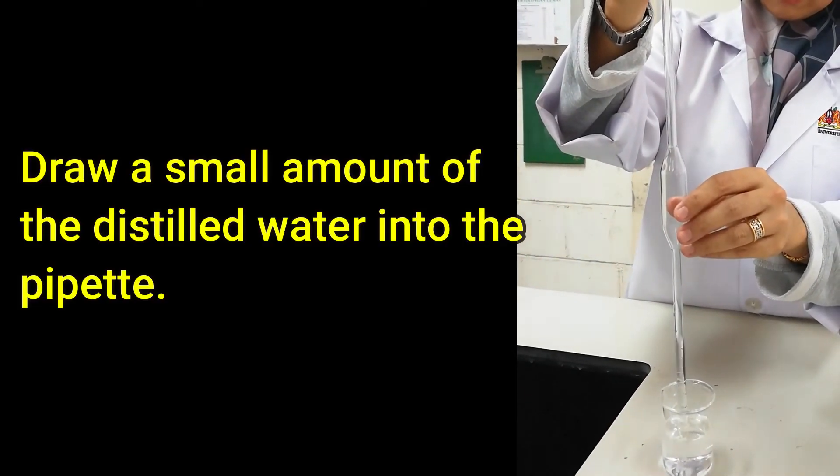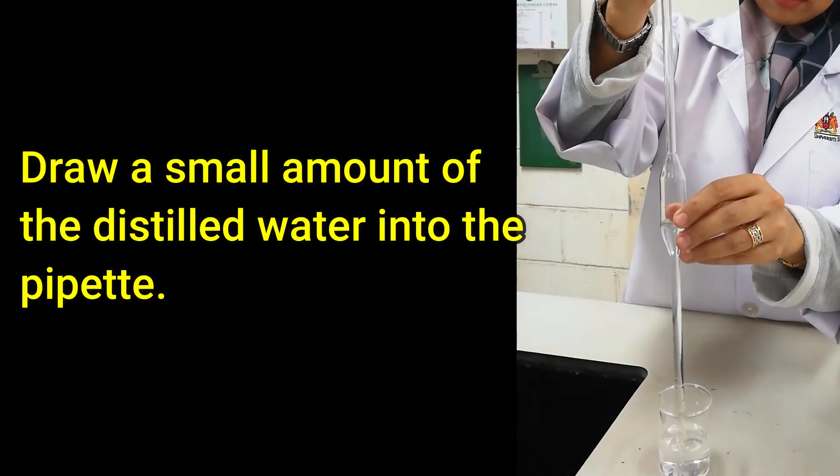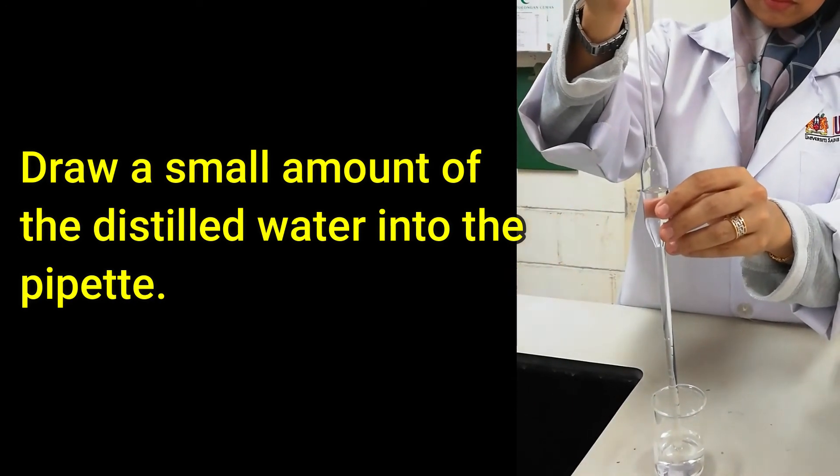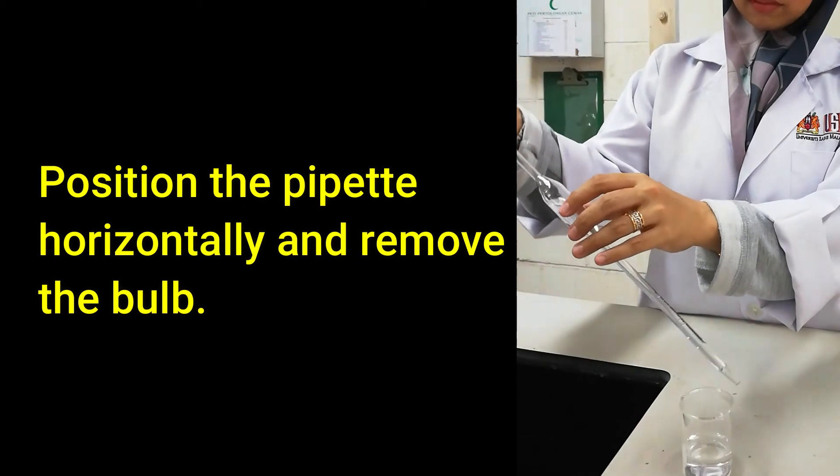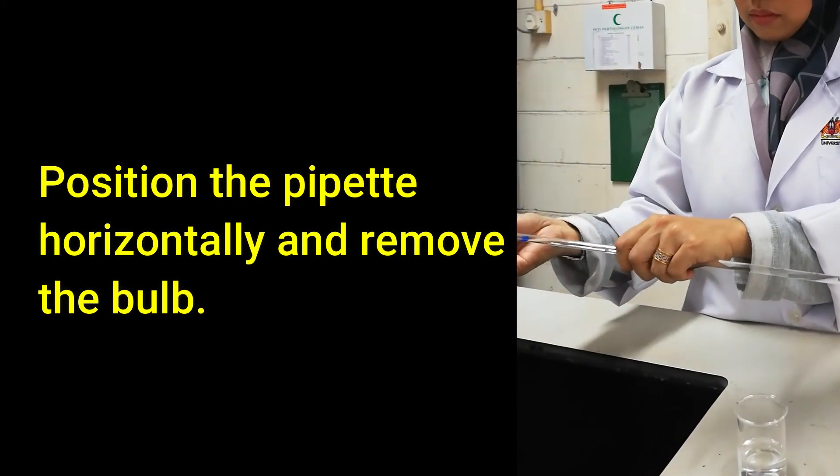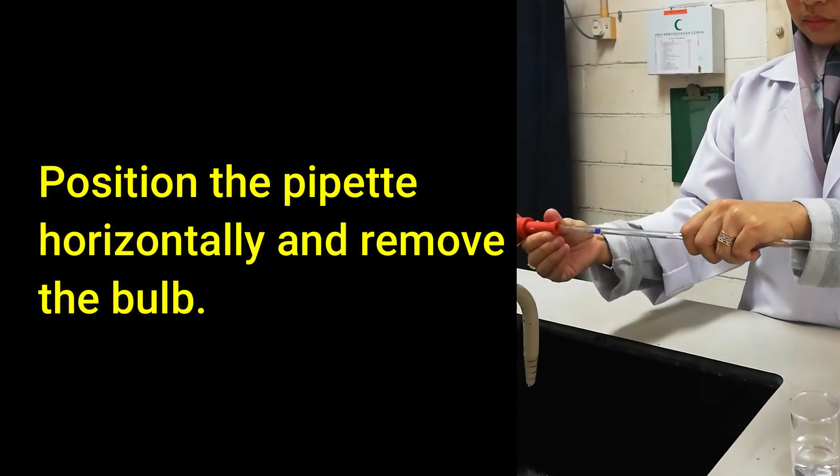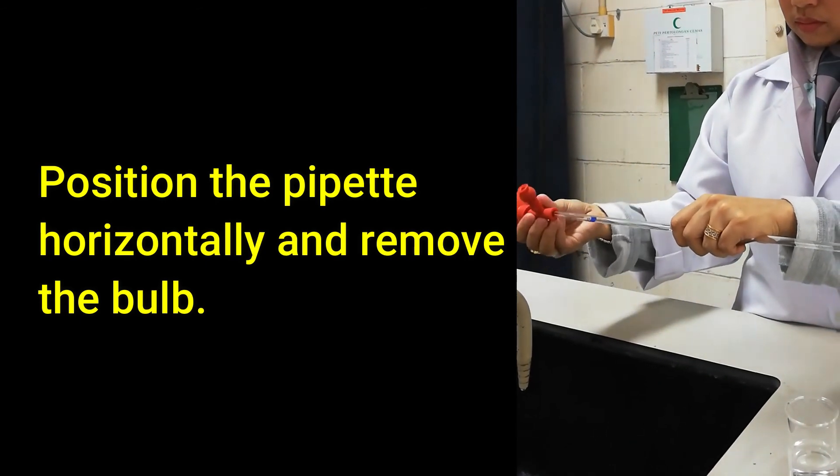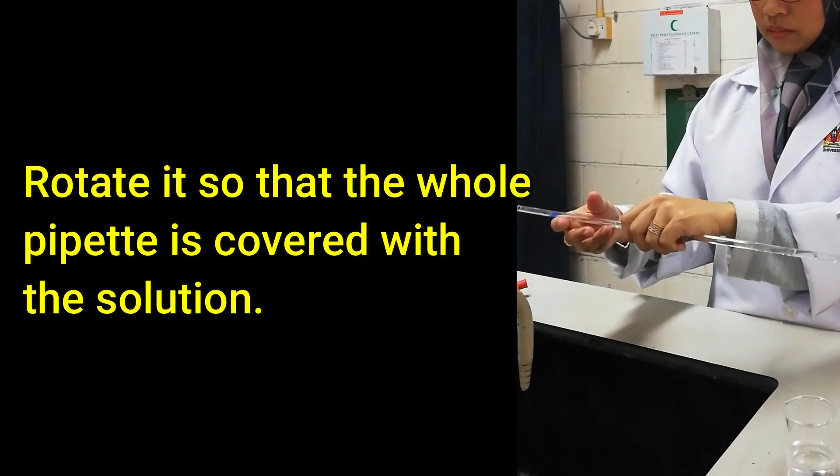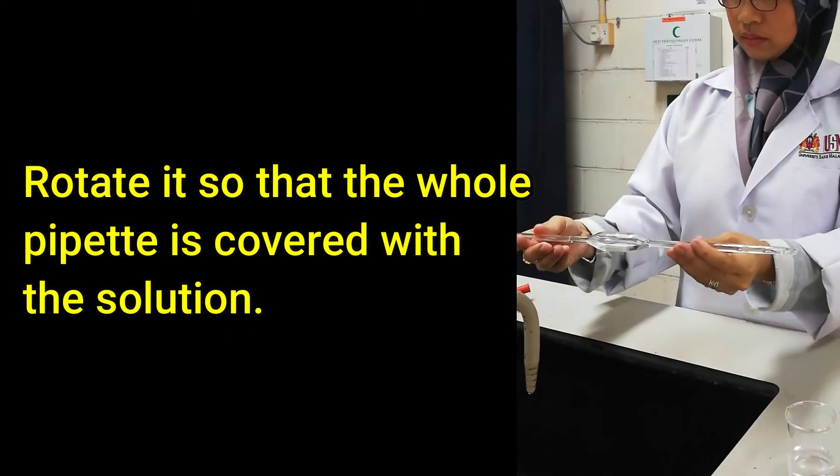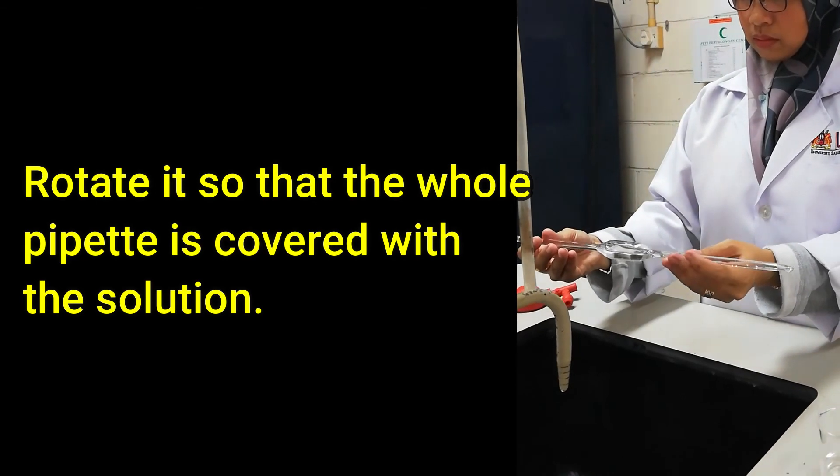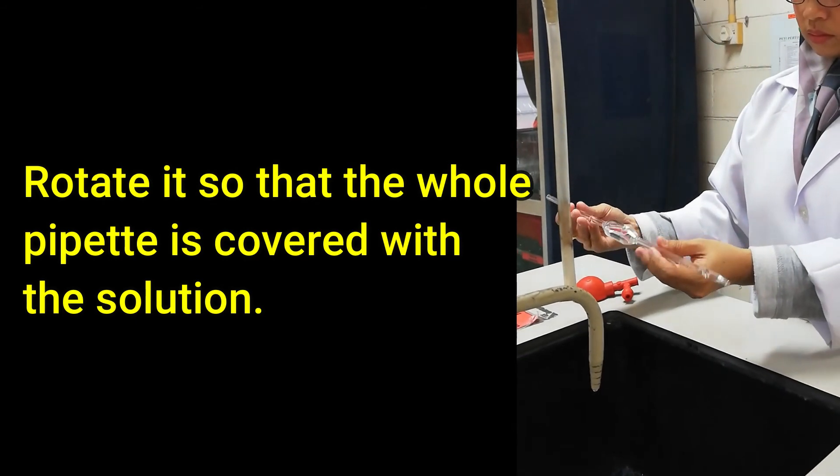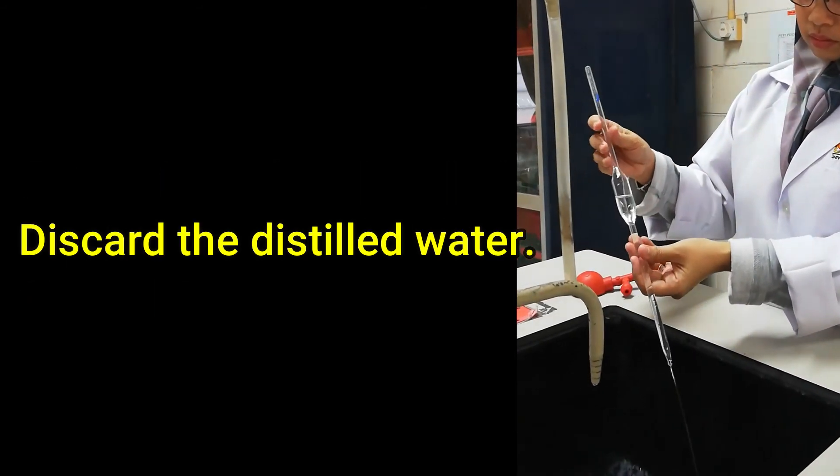To rinse the pipette with distilled water, draw a small amount of the distilled water into the pipette with a pipette filler or pipette bulb. Remove the pipette filler or pipette bulb and close the opening at the top of the pipette with your thumb. Then, position the pipette horizontally. Rotate the pipette so that the whole pipette is covered with distilled water. Discard the solution.